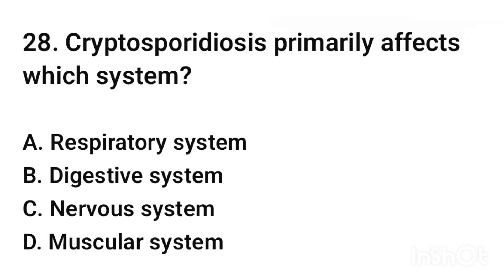Question number 28. Cryptosporidiosis primarily affects which system? The correct answer is option B: digestive system.